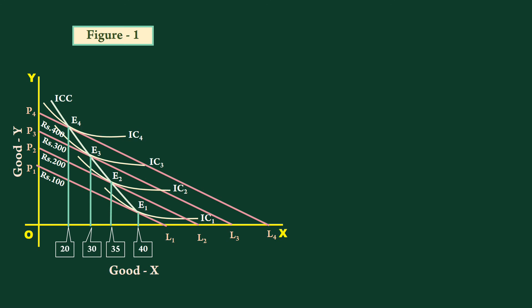Now, we shall represent these pairs of data in figure 2. Income is measured along the y axis and quantity of good x is measured along the x axis. At E1, the income is 100 rupees and quantity purchased is 40 units. We shall plot this point in figure 2 as A.